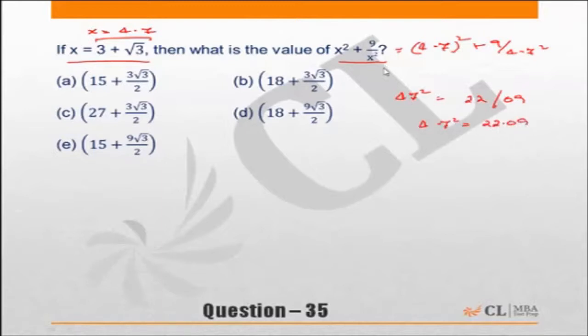Or in other words x square plus 9 by x square is nothing but 22.09 plus 9 upon 22.09. Now 9 upon 22.09 should be about 40%. So to me this value is approximately 22.09 plus 0.4, say about 22.5. So I am looking for a value of 22.5 from the choices.